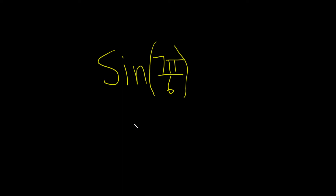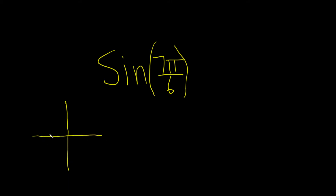In this video, I'm going to show you how to find the sine of 7 pi over 6. There are many ways to do this — here's how I do it. The first thing you want to think about when you look at 7 pi over 6 is the reference angle of this angle. If you don't know what that is, you can always draw a little picture and find the reference angle.